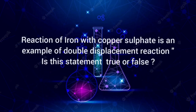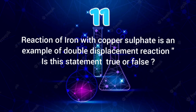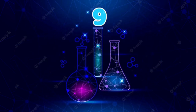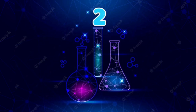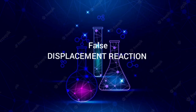Ninth question: The reaction of iron with copper sulphate is an example of a double displacement reaction. Is this statement true or false? Its correct answer is false — it is an example of a displacement reaction.